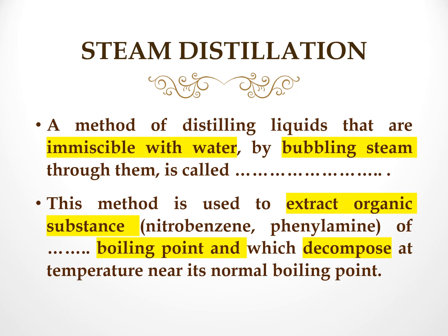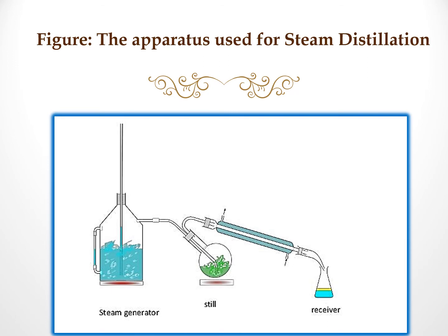Next, let's look at steam distillation. Steam distillation is a method of distilling liquids that are immiscible with water by bubbling steam through them. This method is used to extract organic substances, for example, nitrobenzene and anilines, which have high boiling points and which decompose at temperatures near their normal boiling points. This figure shows the apparatus used for steam distillation. The steam generator is connected to the flask with the liquid mixture, and the vapour is condensed and collected at the receiver.